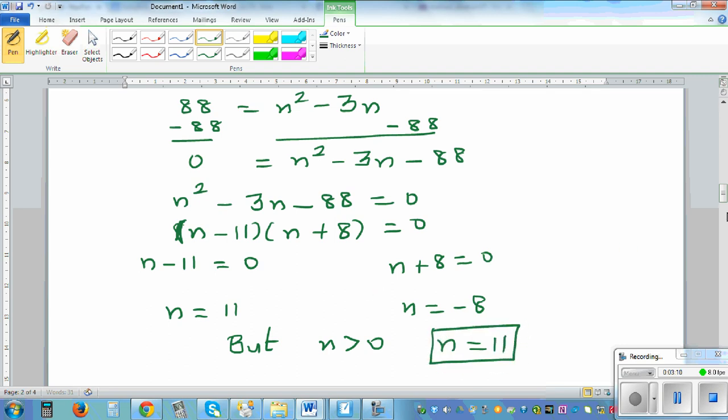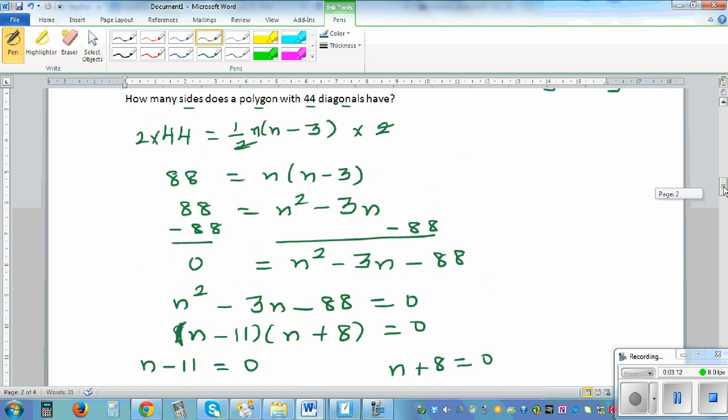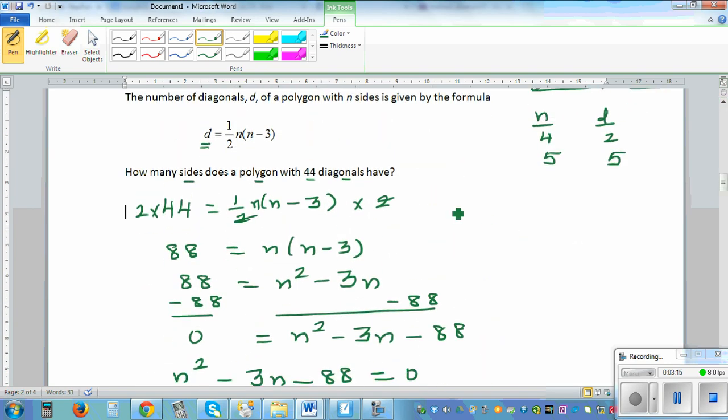If n is 11, you have 44 diagonals. Let's check whether it works. Your d should be one-half of 11 times 11 minus 3, which is 8. It does make sense. This is one-half of 88, which is 44. So if you have 11 sides, you have 44 diagonals, and it does make sense.